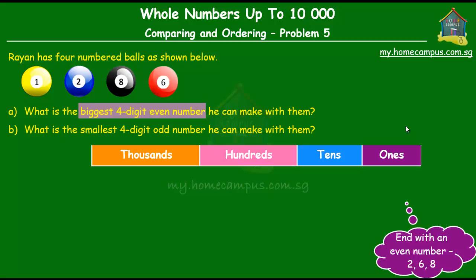Well, the number has to be the biggest four-digit even number. That means that we must put the smallest value number in the ones place because the bigger ones we'll put in the higher positions. So out of 2, 6, and 8, which is the smallest? Obviously 2. So we put the smallest even value in the ones place, and that's the number 2 ball.